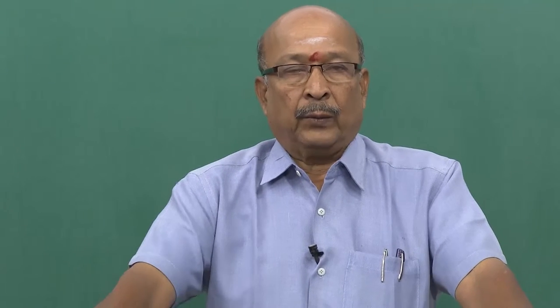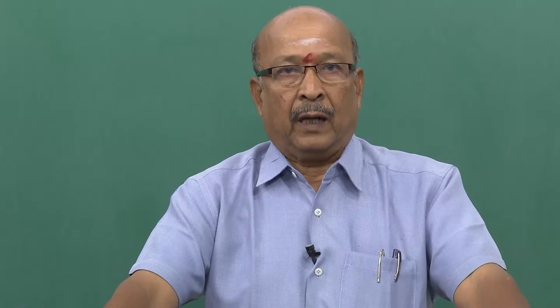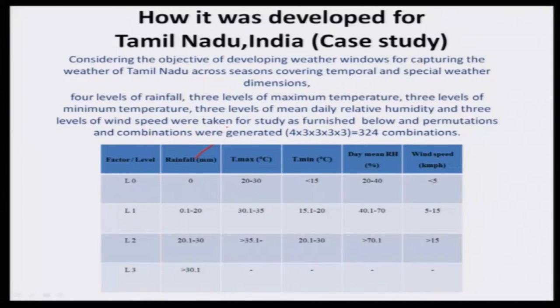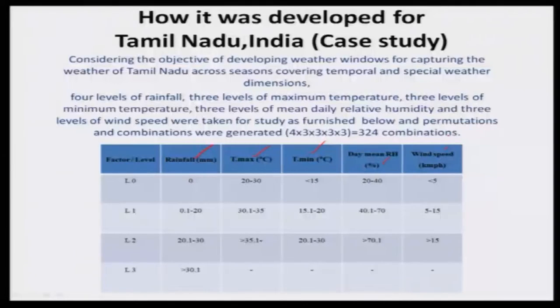How was it developed for Tamil Nadu? We have to prepare a set of weather elements under a single weather window system. In the case of Tamil Nadu Agriculture University, we have taken rainfall as one important weather element for developing crop production risk assessment, along with maximum temperature, minimum temperature, mean relative humidity (morning RH and evening RH averaged), and wind speed. These are the selected weather elements considering their importance in Tamil Nadu crop production. Then the next step: I selected 4 levels of rainfall.